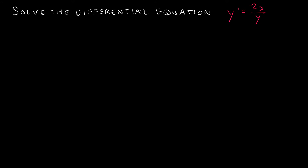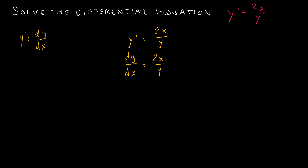Let's take a look at how to solve y prime equals 2x divided by y — it's pretty straightforward. I'm going to rewrite y prime as dy over dx, so I have dy over dx equals 2x over y. Note that your textbook may not rewrite it this way, but you'll get the exact same solution either way.